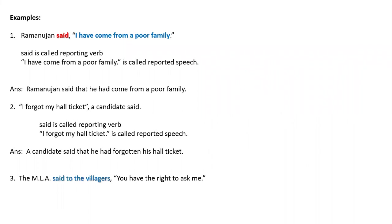Example: 'Ramanujan said, I have come from a poor family.' Change into indirect speech. Ramanujan said that — present perfect becomes past perfect. 'I' becomes 'he' as reporting verb subject is Ramanujan = he. Result: 'Ramanujan said that he had come from a poor family.'